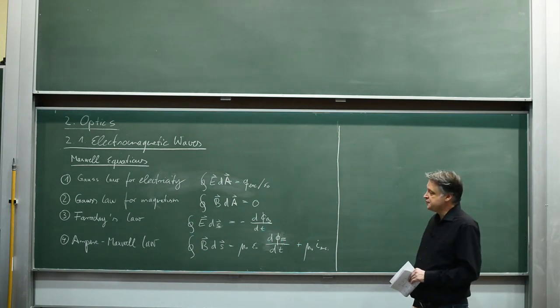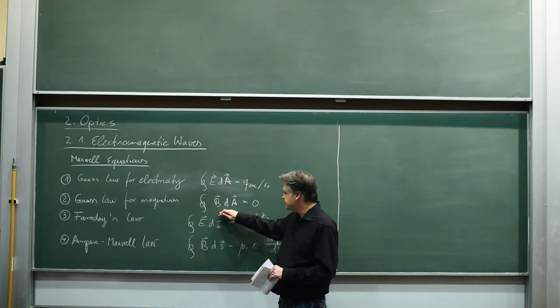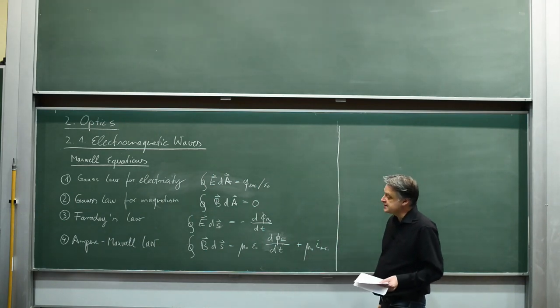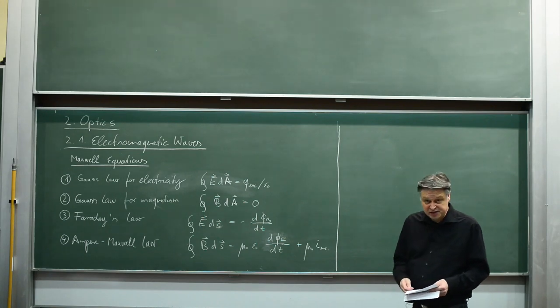The Gauss law for magnetism looks similar: integral B dA is zero. In simple words you could also say there are no magnetic monopoles.